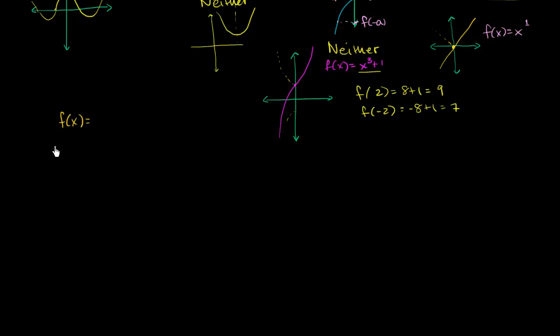Because if I have f of x is equal to x to the first power, that's the same thing as y equals x, this is odd. And it kind of gels with the name because we are also raising it to an odd power. If we have f of x is equal to x squared, we saw in the previous video this is even.